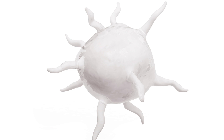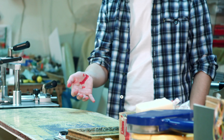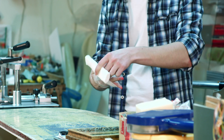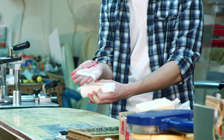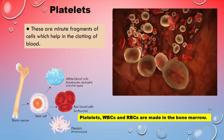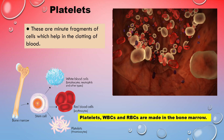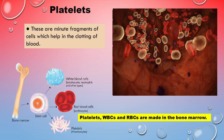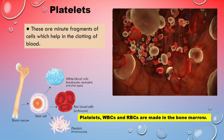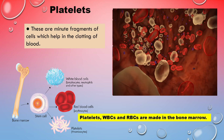Next we have the platelets. Platelets are small fragments of cells which aid in the clotting of the blood. You might have noticed that when you cut your finger it bleeds for some time and then it stops. Why does it stop? It stops because these platelets travel through the capillaries where you have hurt yourself and block the blood from flowing, thereby enabling the clotting of blood.